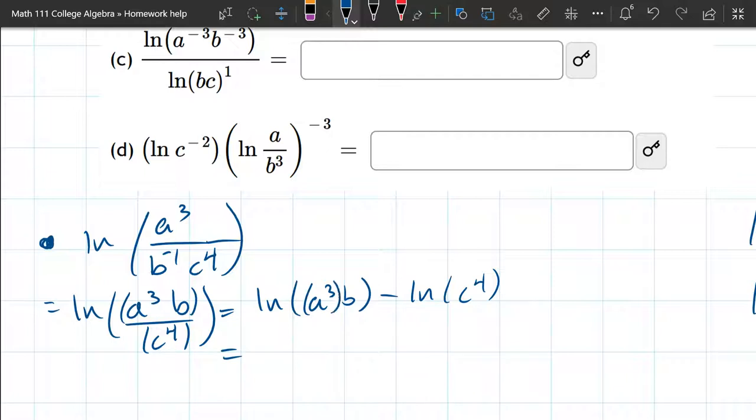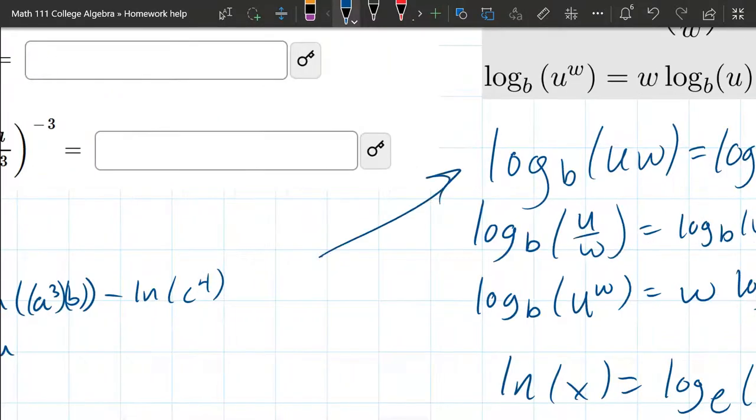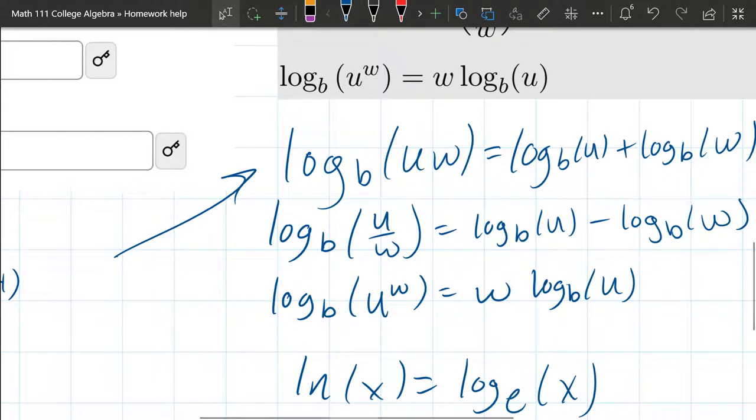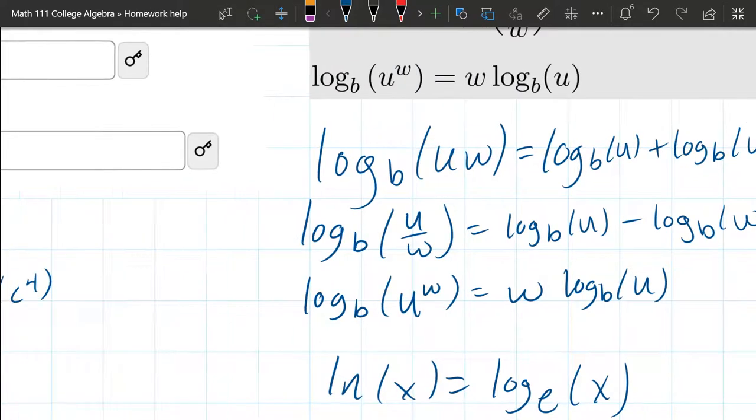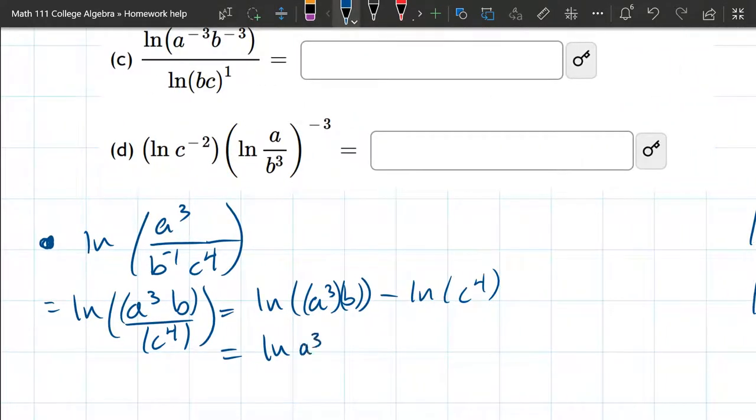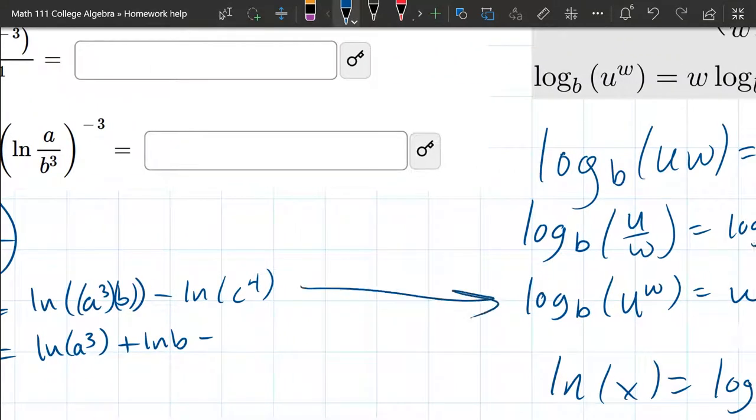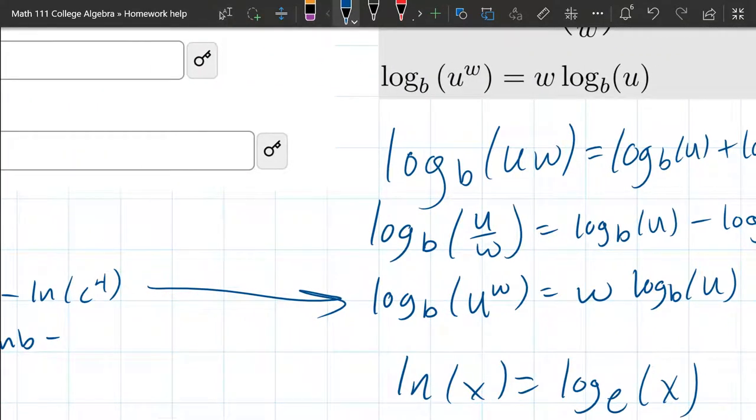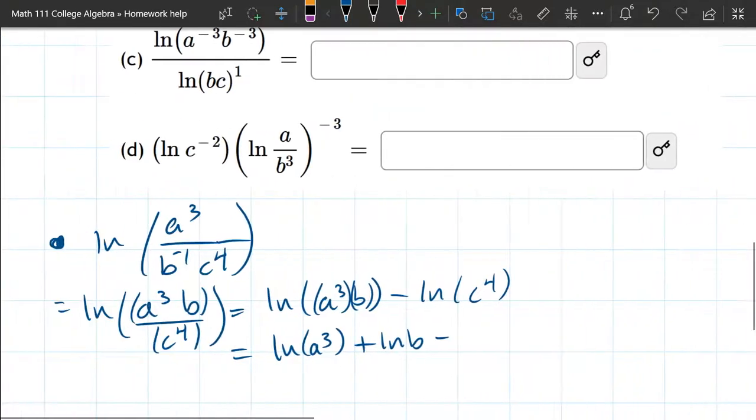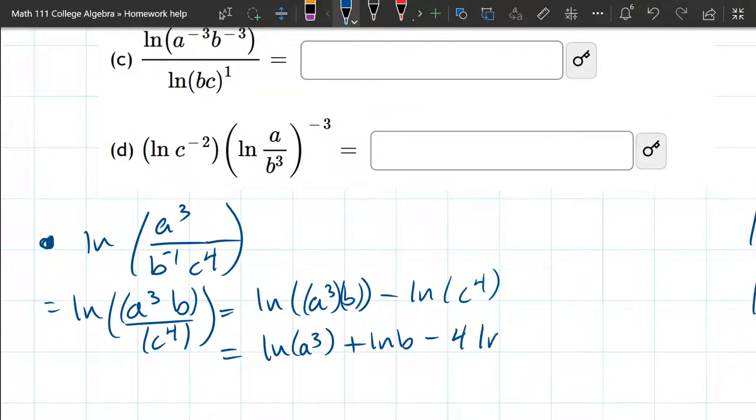Next up, we see A cubed times B. So we got multiplication, which is addition. Right here, multiplication inside is addition outside. So we're about to use that property. So we got ln A cubed plus ln B minus. Let's go ahead and use the property here, which says if you have a power, an exponent, you could bring it out front as a coefficient. So we're about to use that property. So bring that 4 outside, 4 ln C.